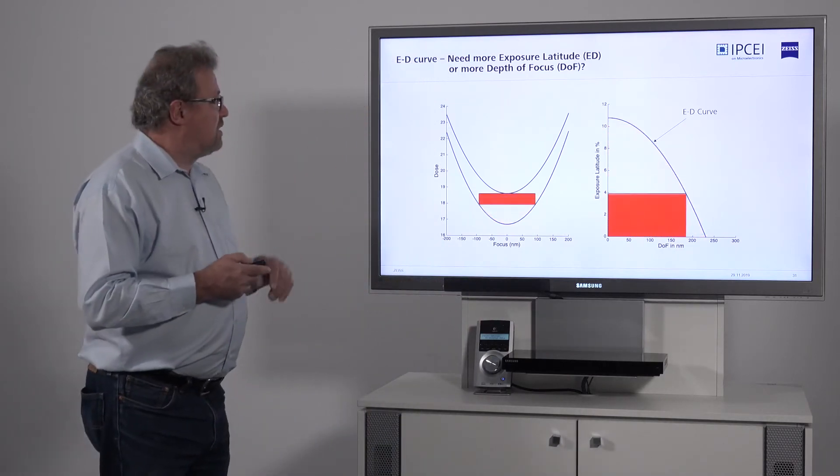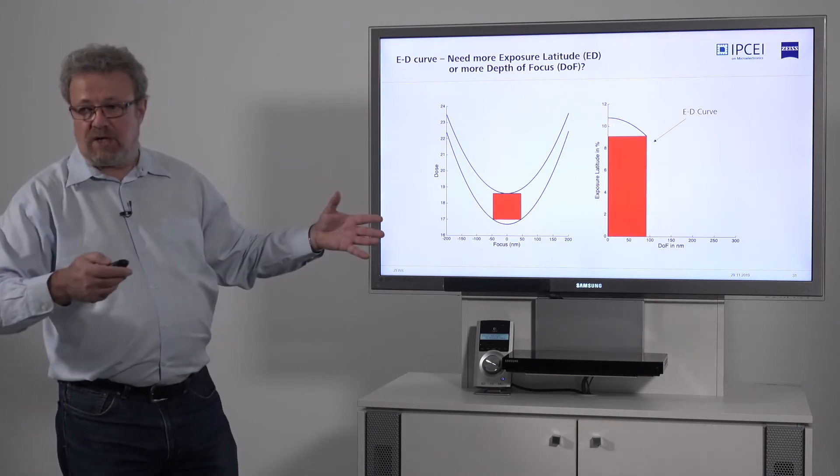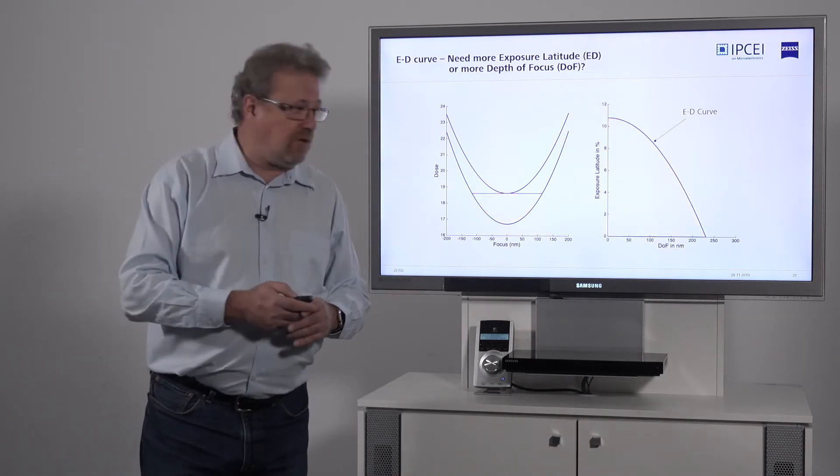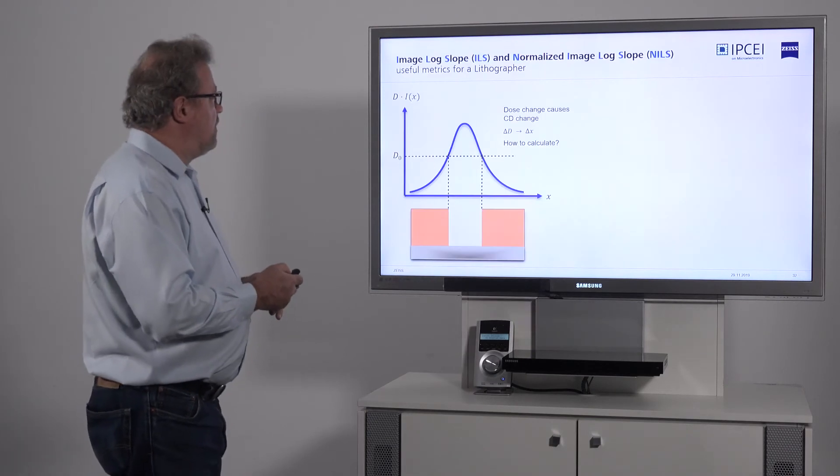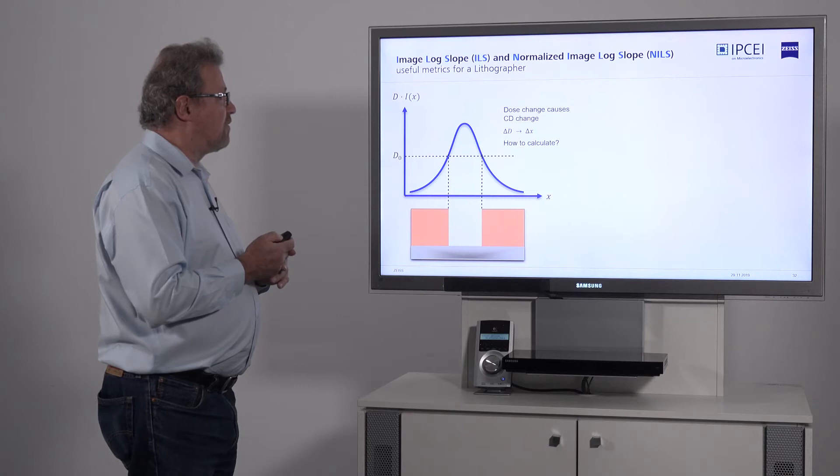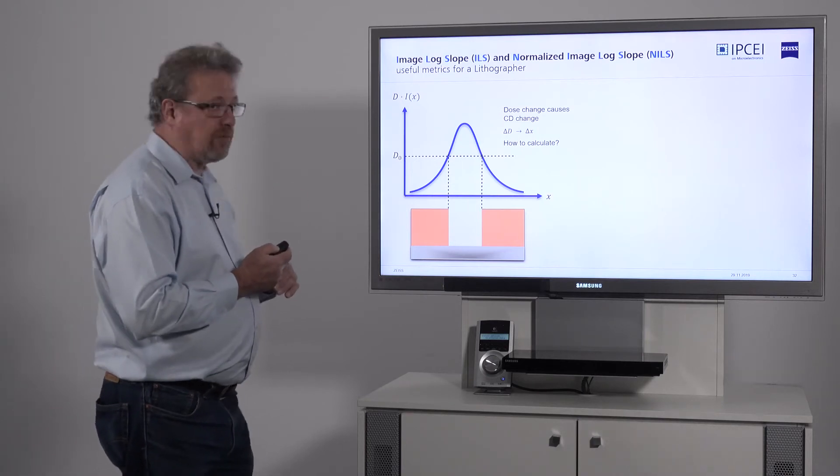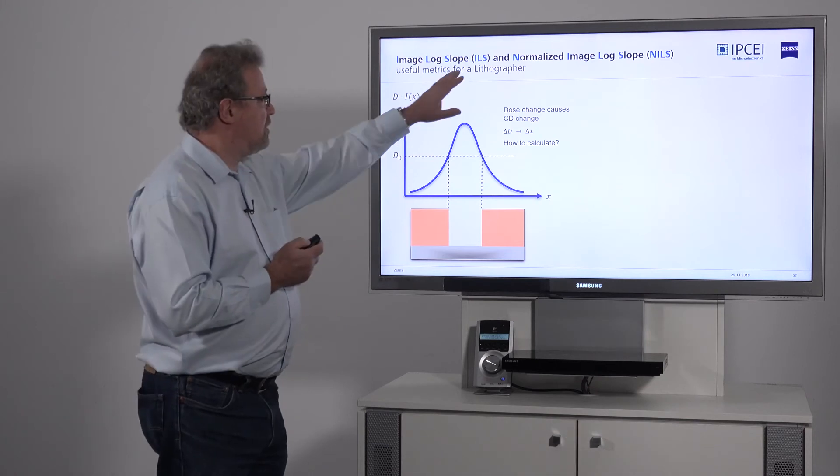So this is the ED curve. Again, all of those curves use the same data that you obtain with your focus energy matrix. Two other quantities that every lithographer is very familiar with are the image log slope and the normalized image log slope—ILS and NILS.